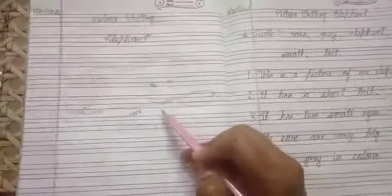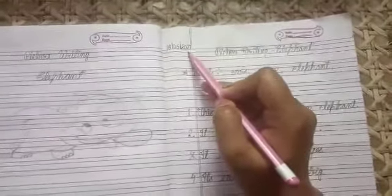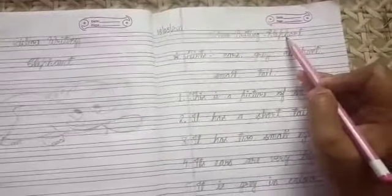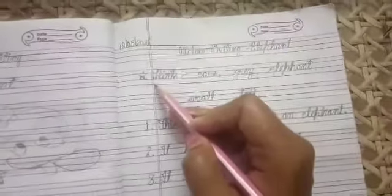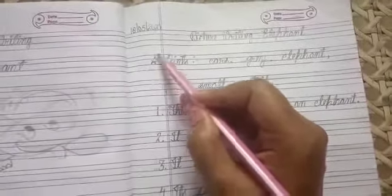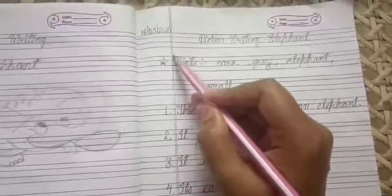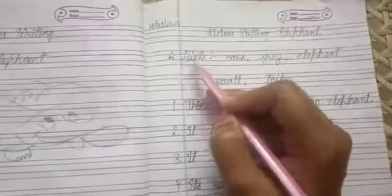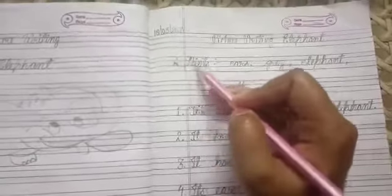In the next page, mention today's date again and write beautifully picture writing in the first line and in center. Then in the next line make one beautiful star and start from this red margin line. Whenever we are writing any sentence, we start from this red margin line. Don't start from here.